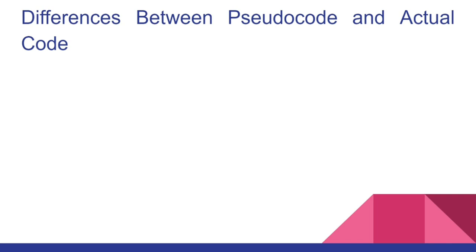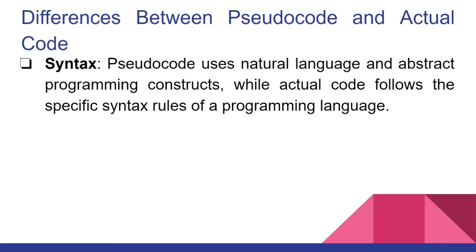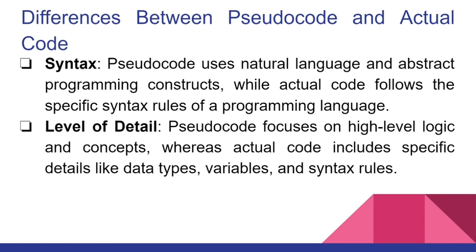I also want to enhance your understanding of the difference between actual code and pseudocode, because they have similarities but also differences. Syntax-wise: Pseudocode uses natural language and abstract programming constructs, while actual code follows the specific syntax rules of a programming language. Level of detail: Pseudocode focuses on high-level logic and concepts, whereas actual code includes specific details like data types, variables, and syntax rules.